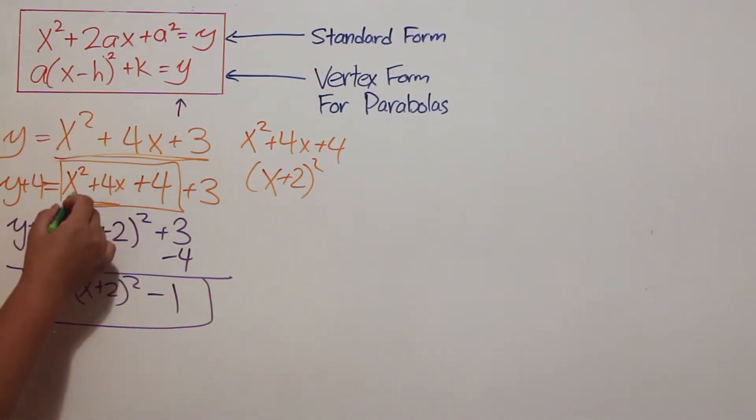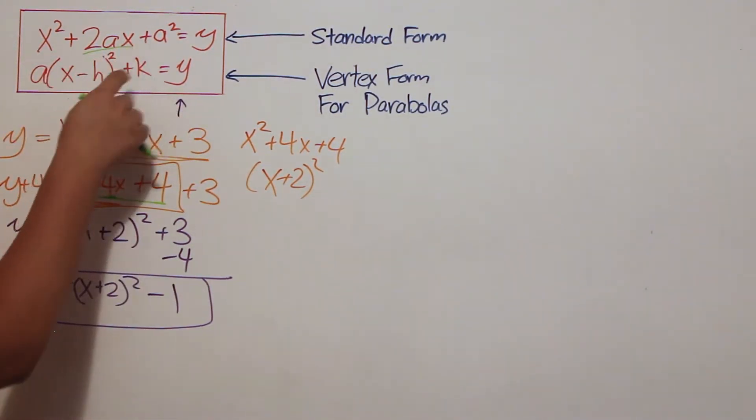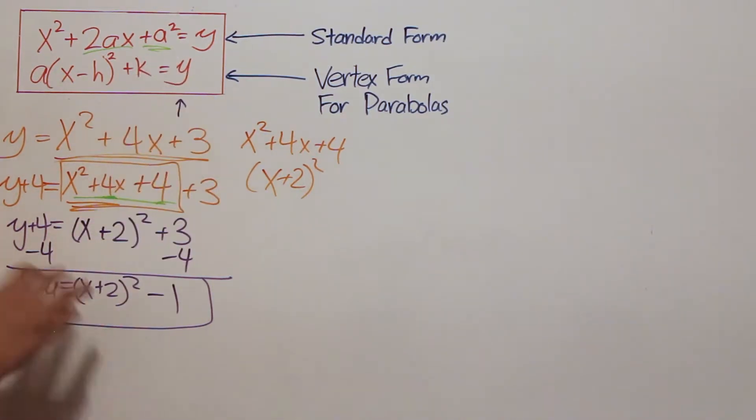So where did the standard form come in? The standard form came in when we tried to match x squared plus 4x plus 4 to the 2ax plus a squared.